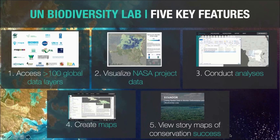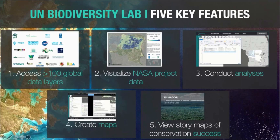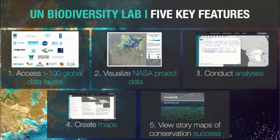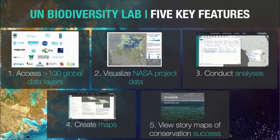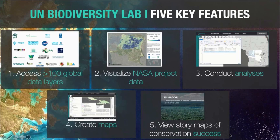Before we dive into the details, I want to go back over the five key features of UN Biodiversity Lab. First, we provide access to over 100 global data layers on biodiversity, protected areas, and sustainable development available through the public side of the site. Second, the platform provides priority access to visualize all data from our NASA-supported projects. Third, we offer the ability to conduct basic analyses without any GIS experience, create beautiful maps for download, and view story maps that communicate conservation success stories across a wide range of countries.